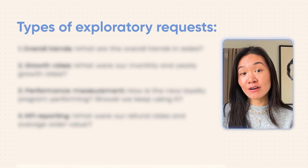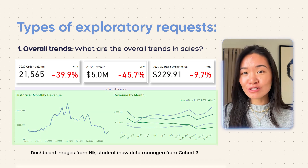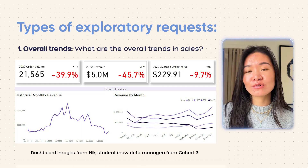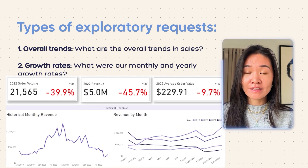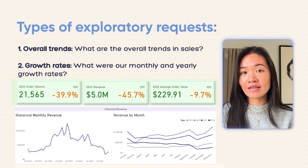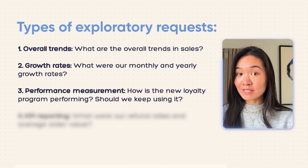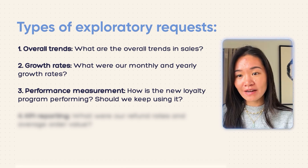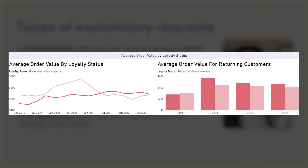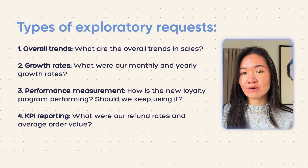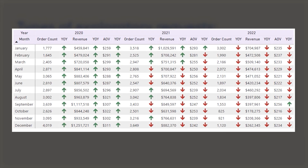As analysts, we generally see about four main categories when it comes to exploratory analysis questions. The first is overall trends — for example, what are the overall trends in sales? This is the process of telling the story of what happened by looking at historical values. Then there's growth rates — calculating and summarizing what happened in the past by looking at fluctuations over different periods of time. Then there's performance measurements — this is where we get into prescriptive analysis, looking at whether something is good or bad and giving recommendations. And lastly, there's KPI reporting — reporting on a specific metric at a specific point in time, like refund rates or average order values.